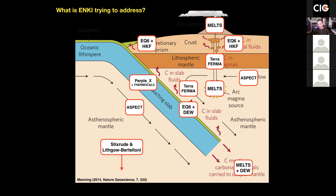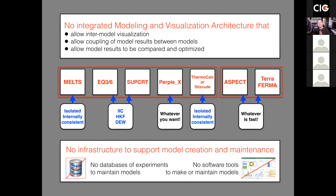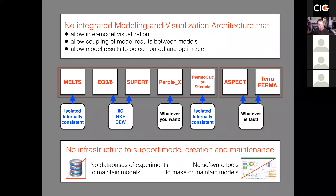The reason I have all these models up here is the following: all of these models are based on thermodynamic data model collections which are essentially independent of each other, and most importantly, inconsistent thermodynamically with each other. As an example, MELTS is built on a completely internally consistent thermodynamic data model collection which is unique to just MELTS. EQ3, EQ6, SUPGRIT — those aqueous solution codes — are based on thermodynamic data model collections that have nothing to do with the ones in MELTS. There is no requirement of internal consistency.